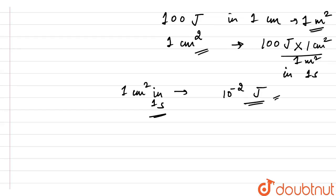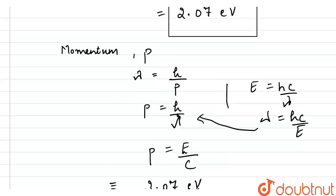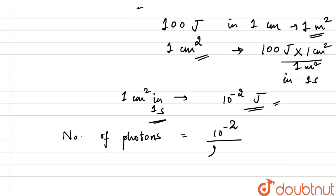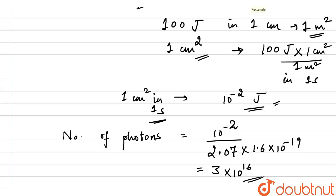This is the energy of the photons that pass through. To calculate the number of photons, we need the energy of one photon, which is 2.07 electron volt. Converting to joules by multiplying by 1.6 into 10 to the power minus 19, we get 3 into 10 to the power 16 — the number of photons that pass through one centimeter square area in one second.